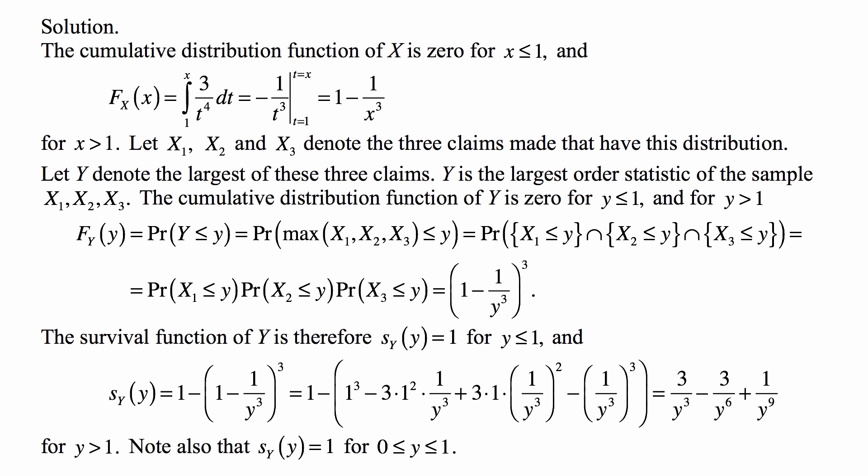The survival function of Y is therefore 1 for y less than or equal to 1, since the CDF is 0 there. For y greater than 1, it is 1 minus the CDF: 1 minus (1 minus 1 over y cubed) cubed. Expanding using the binomial theorem, that becomes 3 over y cubed minus 3 over y to the 6th plus 1 over y to the 9th. Also, S_Y(y) equals 1 for y between 0 and 1, and this random variable is non-negative almost surely.